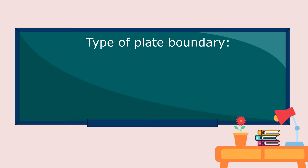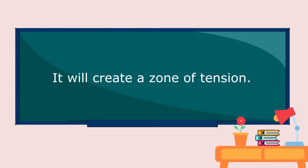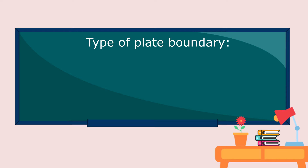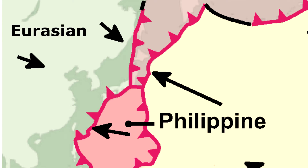The first type of plate boundary is the divergent boundary, where the plates move apart, creating a zone of tension. The second type of plate boundary is known as the convergent plate boundary. Just like the case of the Eurasian plate and the Philippine plate, the plates collide and move towards each other.